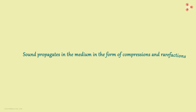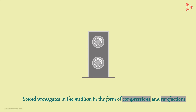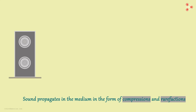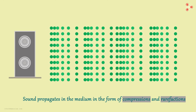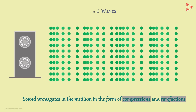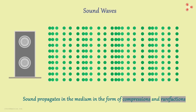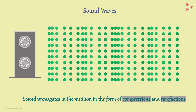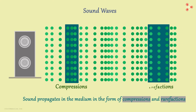We have seen how sound propagates through a medium. When the object vibrates, it creates a disturbance in the surrounding medium, and this disturbance is what we call a sound wave. The wave travels through the medium in the form of compressions and rarefactions.